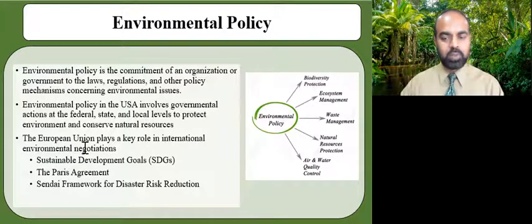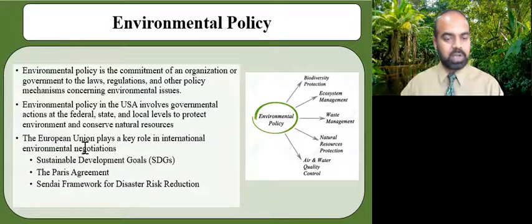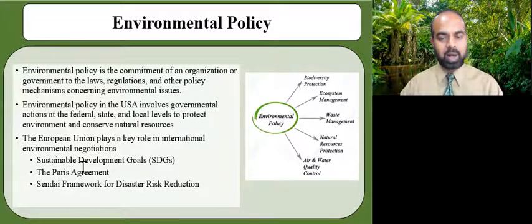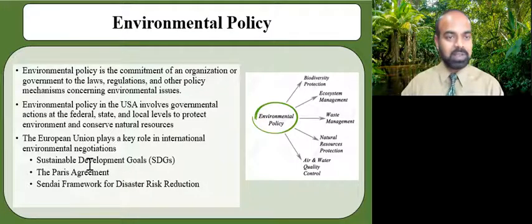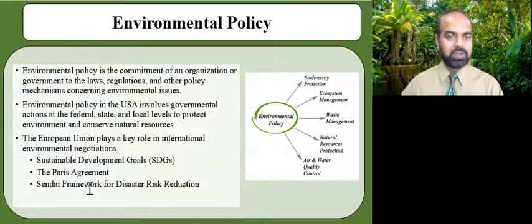The European Union plays a key role in international environmental negotiations. It is a party to numerous global, regional, or sub-regional environmental agreements on a wide range of issues such as nature protection and biodiversity, climate change, and transboundary air or water pollution. The EU helped shape several major international agreements adopted in 2015 at the United Nations level, such as the 2030 Agenda for Sustainable Development, which includes 17 Sustainable Development Goals (SDGs), the Paris Agreement on Climate Change, and the Sendai Framework for Disaster Risk Reduction.